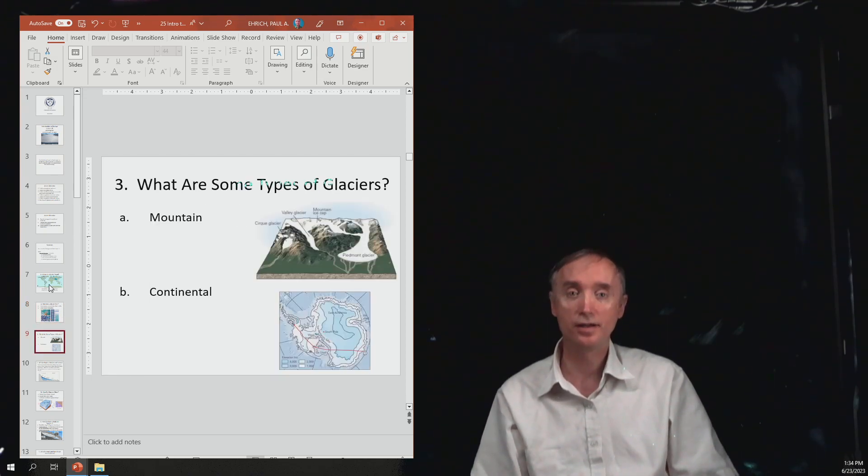What are some different types of glaciers? We've already mentioned glaciers that are found in the mountains, but you can also have glaciers that cover an entire continent. An example of this would be Antarctica, and another example might be Greenland, where you have an entire continent covered over by a glacier.